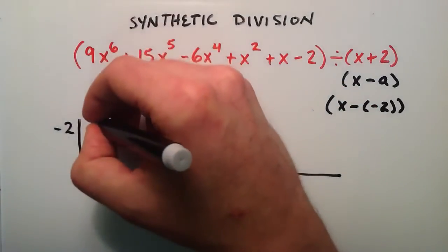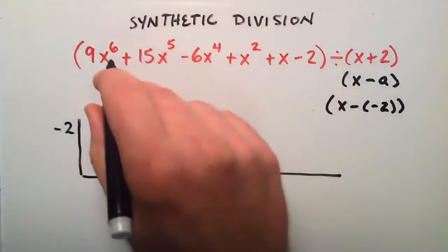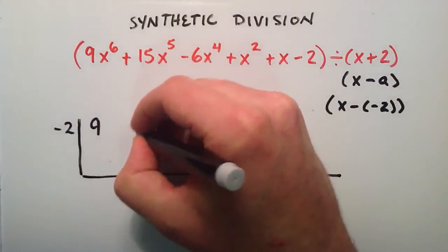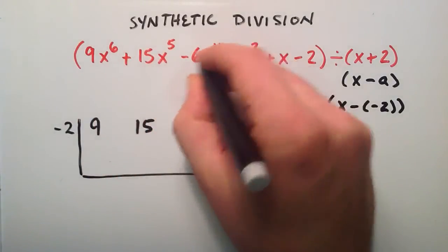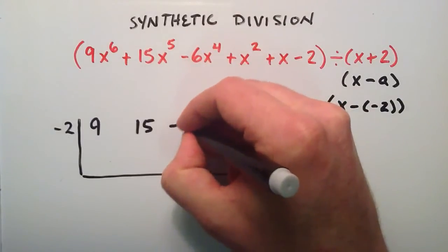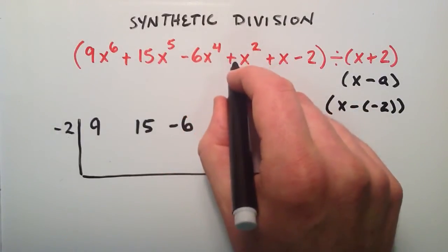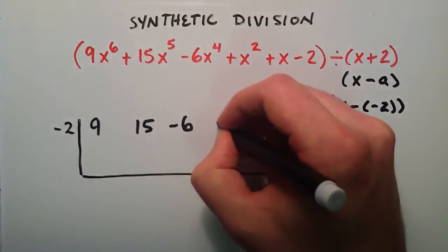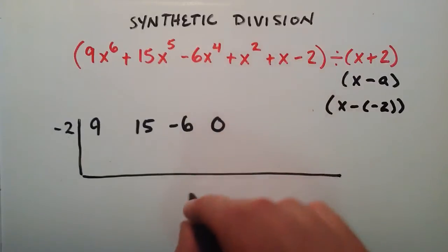And starting with the highest we're going to do 9. And then we have, so we have x to the 6th, x to the 5th our coefficient is going to be 15. For x to the 4th our coefficient is negative 6. And notice that we don't have an x to the 3rd term. But we still need to account for that. So we're going to put a 0 for the coefficient of x to the 3rd.